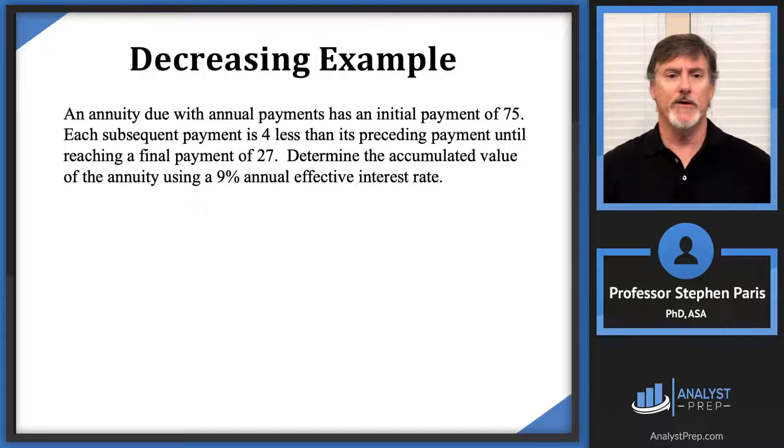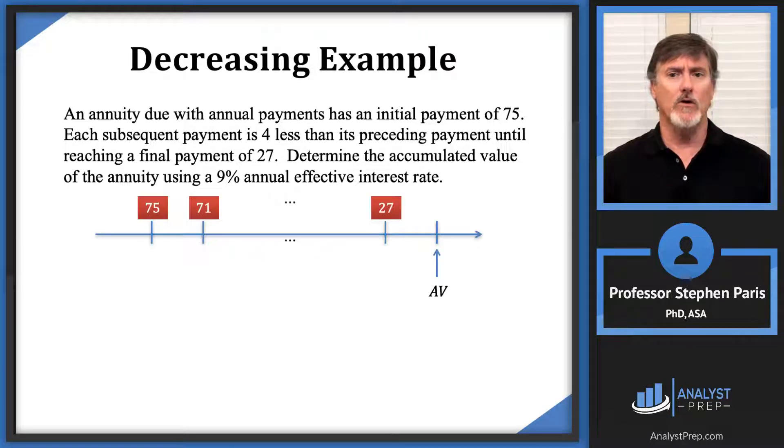We're asked to determine the accumulated value of the annuity using a 9% annual effective interest rate. It's the accumulated value of an annuity due, so I'm going to have a value one period after the last payment. My timeline is going to look like this: the first payment is 75.